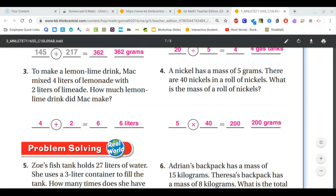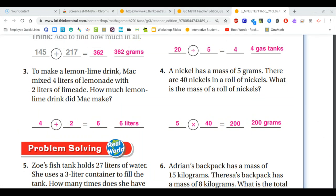For number four, we have a nickel that has a mass of five grams and there are 40 nickels in a roll. So what's the mass of that roll of nickels? We need to know how much that mass is of the whole roll. So we would need to multiply five times 40, which would give us 200. And here we can use that zero trick by putting the zero at the end, and then five times four is 20.